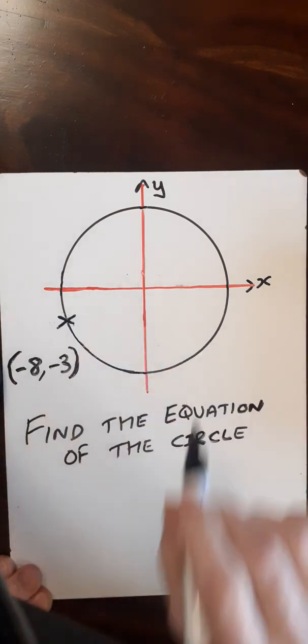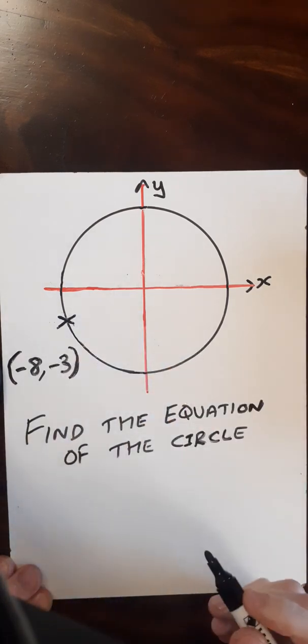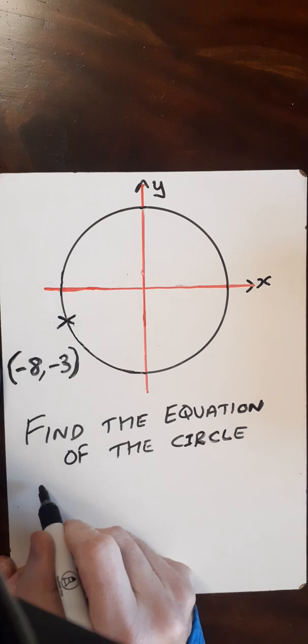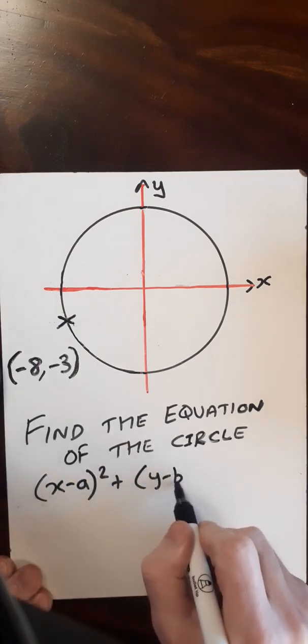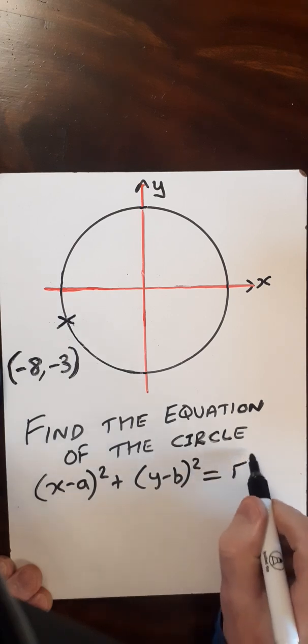So here we want to find the equation of this circle. Now the equation of a circle takes on the format of (x-a)² + (y-b)² = r².